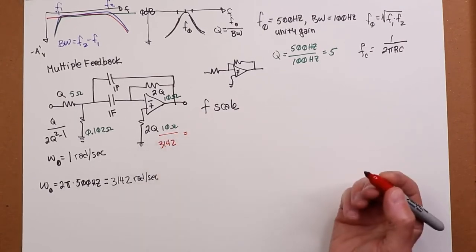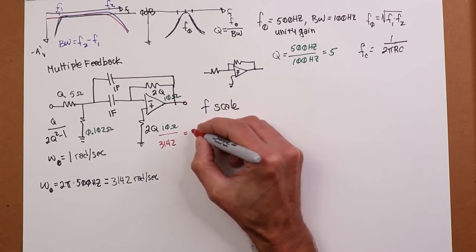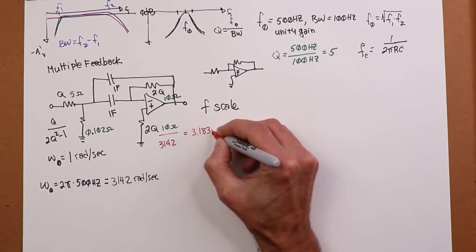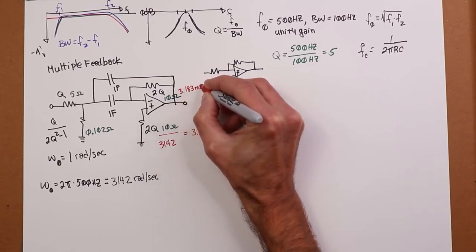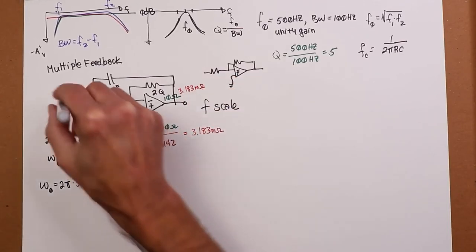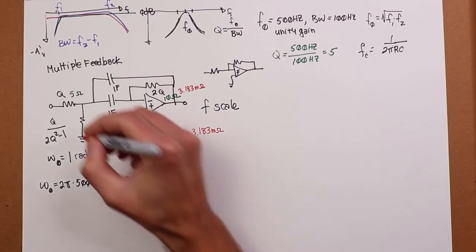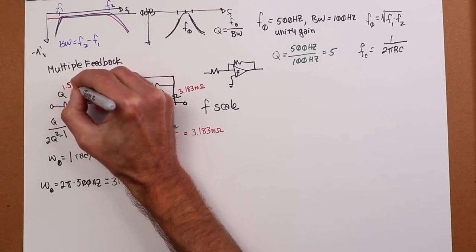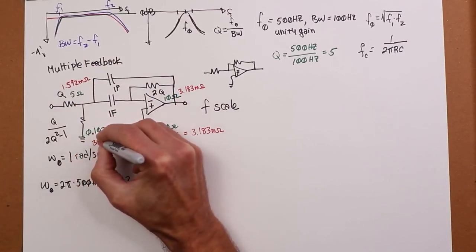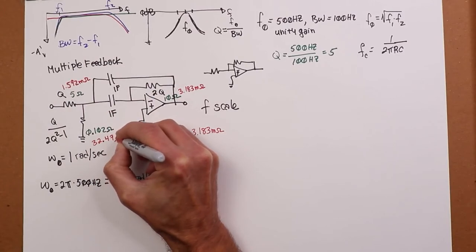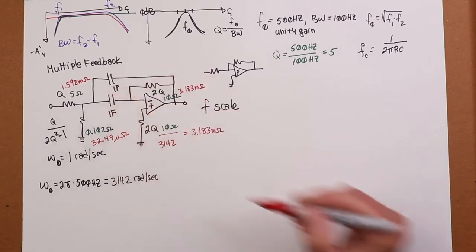So when I do that, divide 10 ohms by 3142. Well, that's going to turn into, for both of these guys, 3.183 milliohms. This guy over here, the 5 ohm, that's half the value, so that's going to be roughly 1.592 milliohms. And then this little guy over here turns into 32.47 microohms. Again, keeping the 1 farad capacitors. So we use the red version, and we have what we asked for. 500 hertz, bandpass filter, unity gain with a Q of 5. In other words, a bandwidth of 100 hertz.